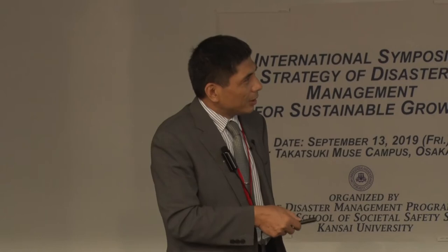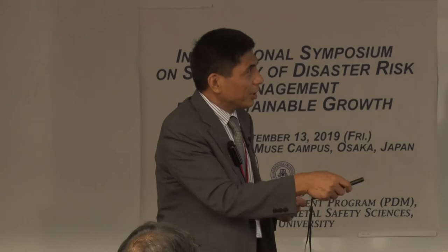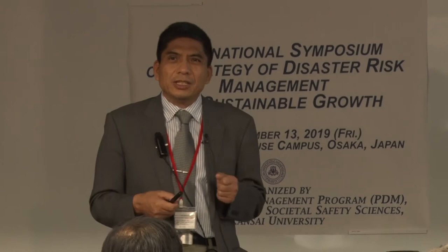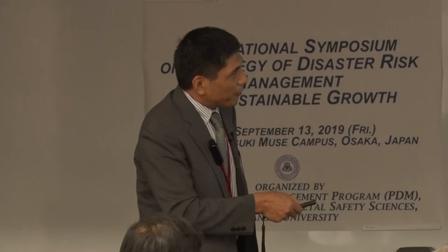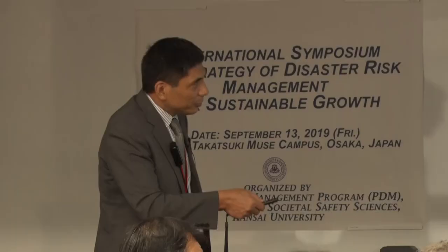The first is to avoid disaster-prone areas. Just as I mentioned, there are fault lines and flat rivers, so we have to avoid these hazard areas as far as possible. But if we have to build some buildings or infrastructure near a fault line or near a floodplain, we have to use disaster-resistant structures, such as earthquake-resistant structures or flood-proof structures.